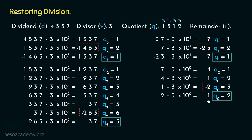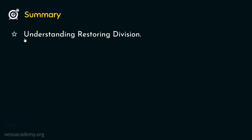The final remainder is 1. This is how the machine performs division in the restoring division procedure. In this session we obtained the understanding of restoring division procedure. In the next session, we are going to observe the implementation of restoring division procedure. Thank you all for watching.